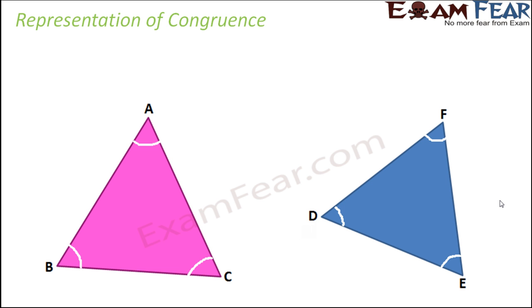When we talk about congruence of triangles, we see that the moment you talk about two triangles which are congruent — like in this case, these are the two triangles. I have taken the same two triangles as were there in the last slide, just that I have named them. So the first triangle is named ABC and the second triangle is named DEF.